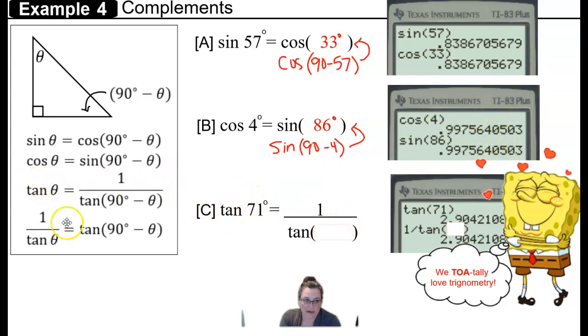The tangent property, or identity, says the tangent of the angle theta is equal to the reciprocal of the tangent of its complement. So 1 over the tangent of 90 minus theta. So the tangent of 71 is equal to 1 over the tangent of its complement, which would be the tangent of 90 minus 71.